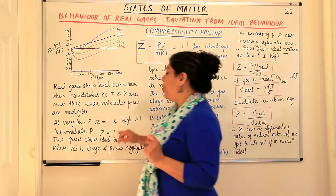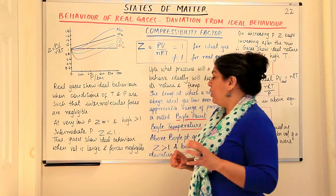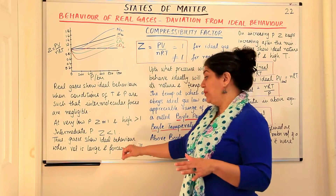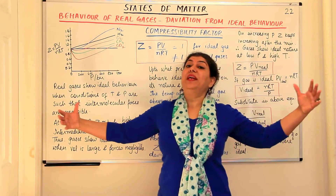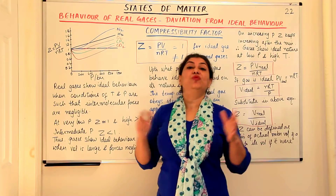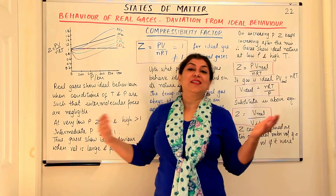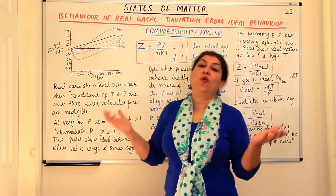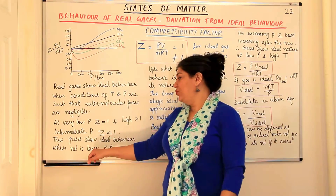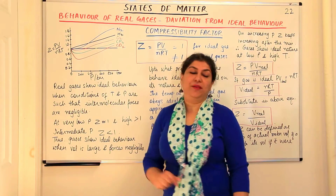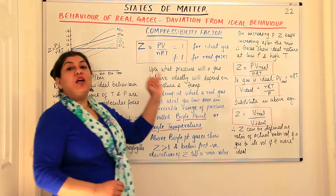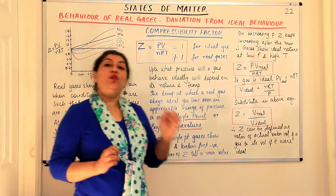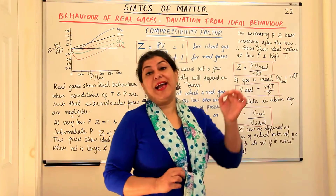Gases show ideal behavior when volume is large and intermolecular forces are negligible. If volume is very large, the distance between molecules increases and intermolecular forces or attractions become almost negligible — that is when they show ideal behavior. Up to what pressure a gas behaves ideally would depend on its nature and temperature.